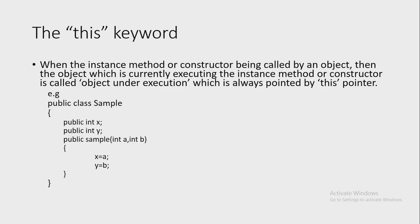Our next topic is the 'this' keyword. When an instance method or constructor is called by an object, the object currently executing that method or constructor is called the object under execution, and it is always pointed to by the 'this' pointer. Java defines the 'this' keyword so that a method can refer to the object that invoked it. 'this' can be used inside any method to refer to the current object — it is always a reference to the object on which the method was invoked.